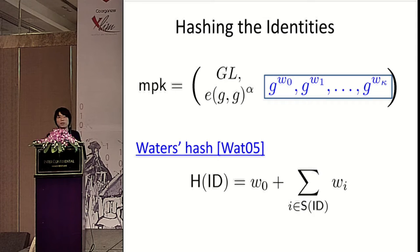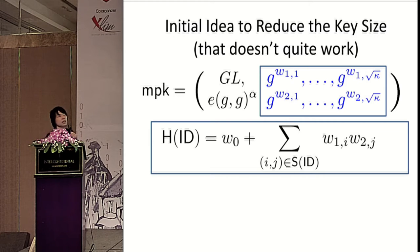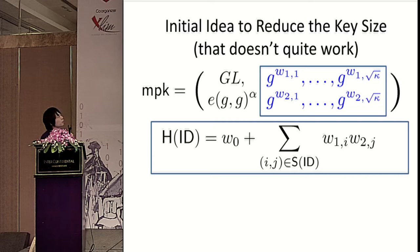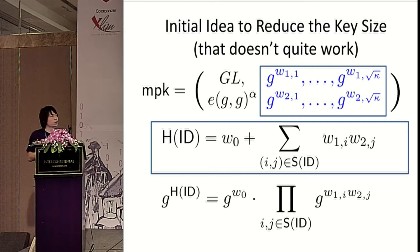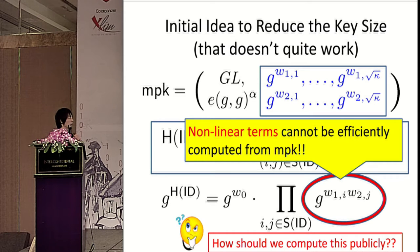Hash(ID) in Waters IBE is defined by a linear function, which leads to a long public key with group elements linear in the ID length κ. A simple idea is to make hash(ID) nonlinear — using only 2·√κ elements in the master public key, going in the right direction. However, for Waters IBE, everyone must be able to compute G^{H(ID)}, and with a nonlinear hash this term can't be computed efficiently — it's essentially solving the computational Diffie-Hellman problem, which we cannot do. So the question is: how do we compute this publicly?